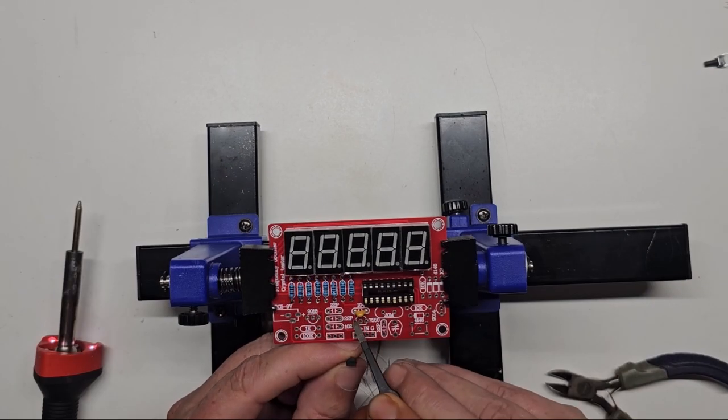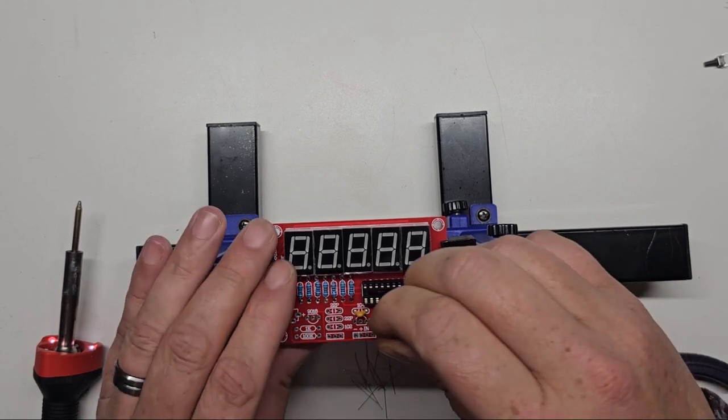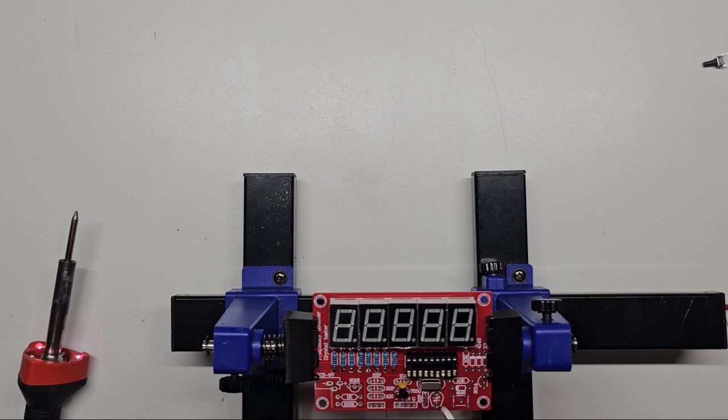When inserting the transistors make sure the flat side of the transistors matches the width of print on the board. For the trimmer match the trimmer flat edge with the print on the board.